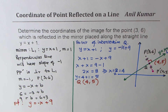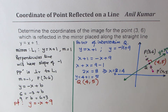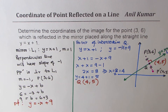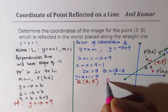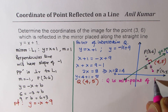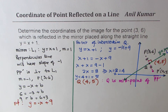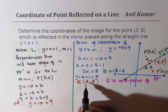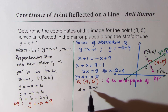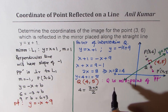We found the coordinates of point Q as (4, 5) — that is the point of intersection between PP' and the mirror line y = x + 1. Now we need to find the coordinates of P', which is the same distance from Q as P. Q is the midpoint of segment PP'. The coordinates of the midpoint are the averages of the endpoint coordinates.